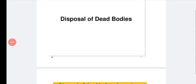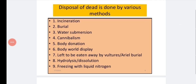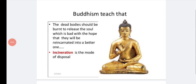We'll start with a new topic: disposal of dead bodies. There are various methods of disposal of dead bodies. Generally, we will speak about nine basic methods: incineration, burial, water submersion, cannibalism, body donation, body world display, left to be eaten by vultures or aerial burial, hydrolysis or dissolution, and freezing with liquid nitrogen. These are the main methods of dead body disposal.